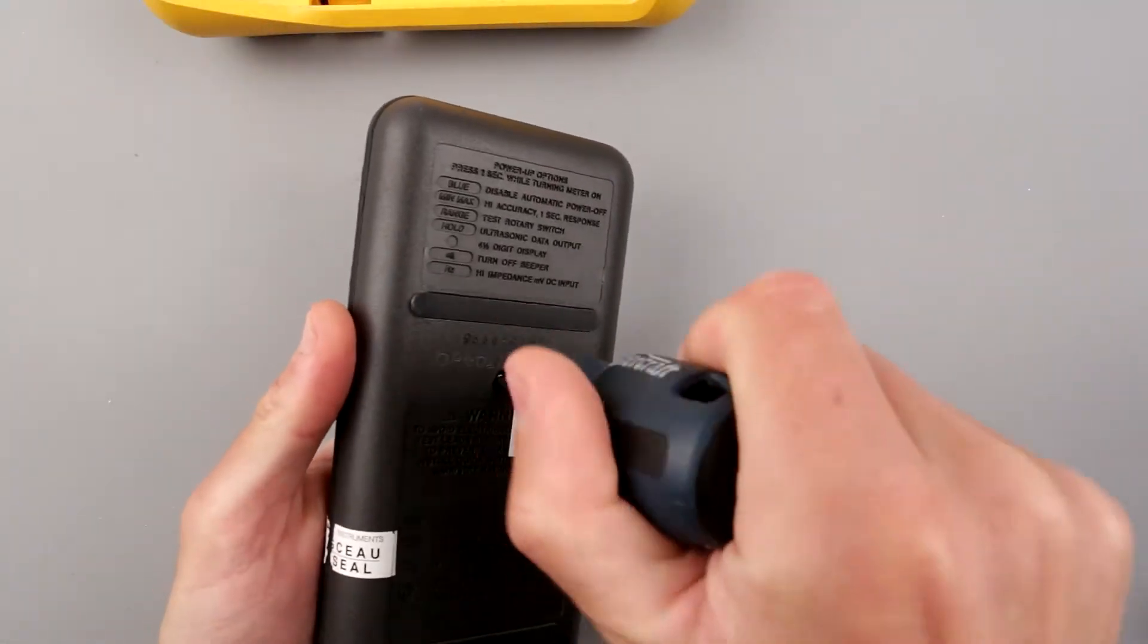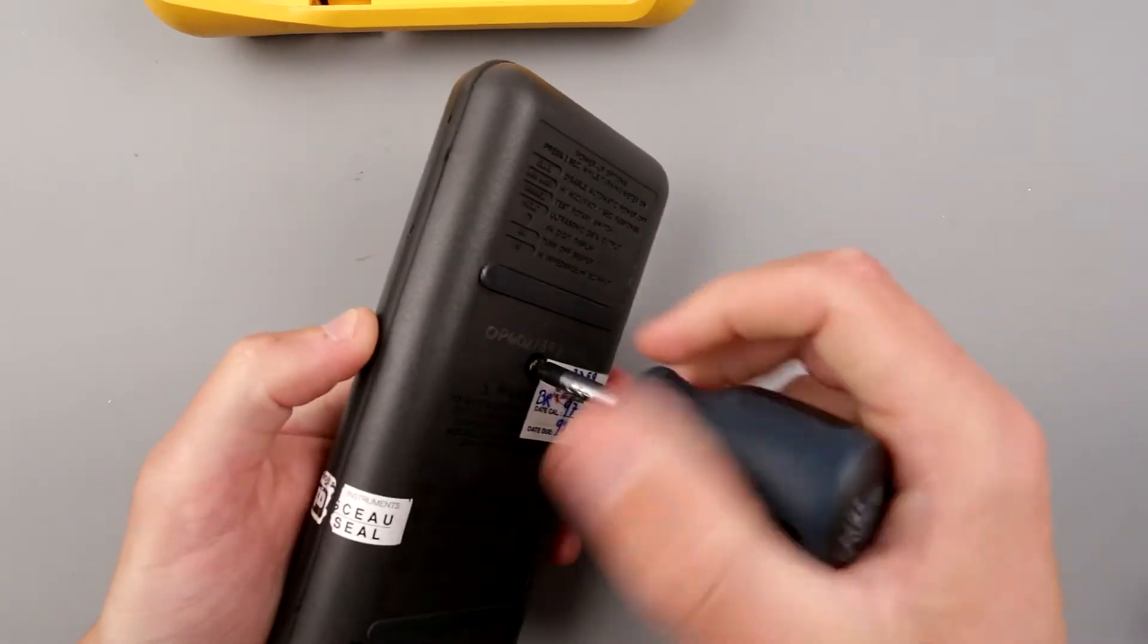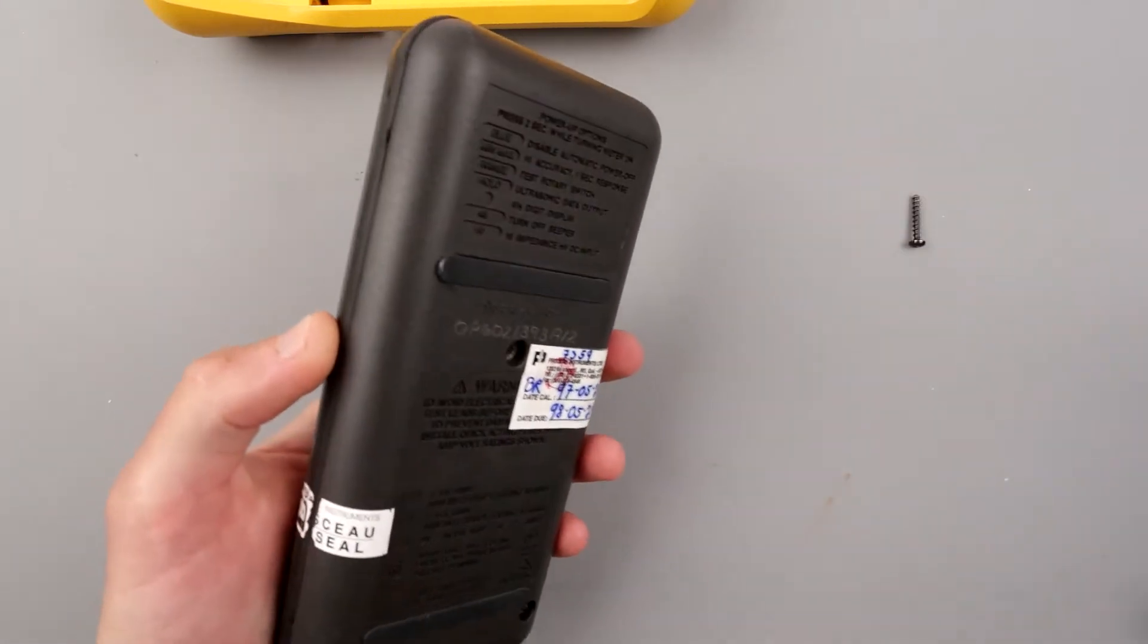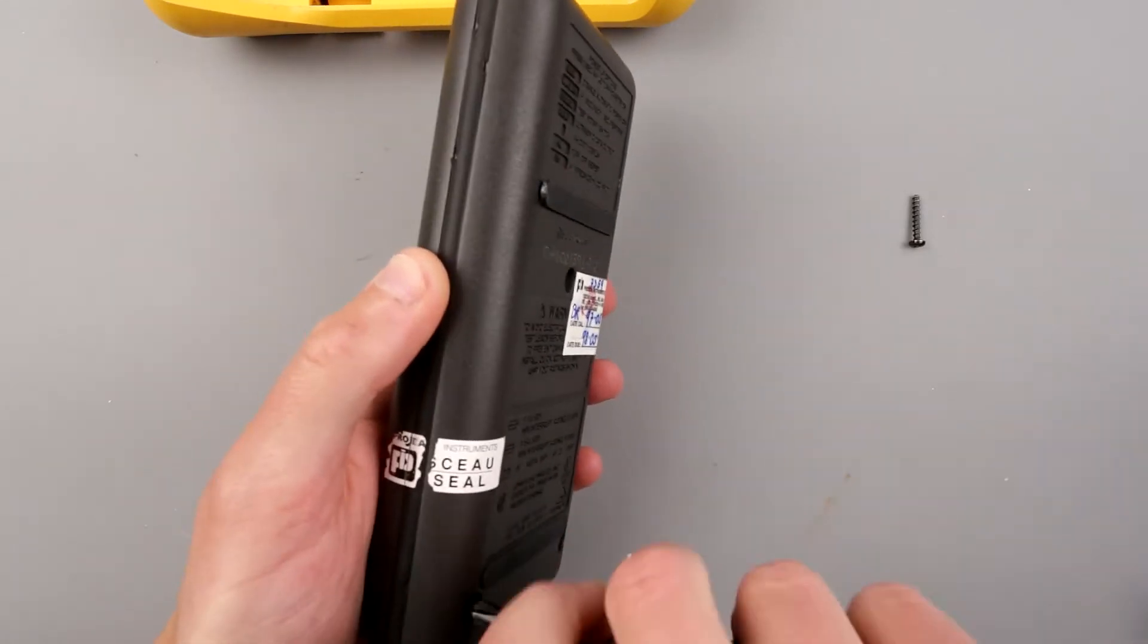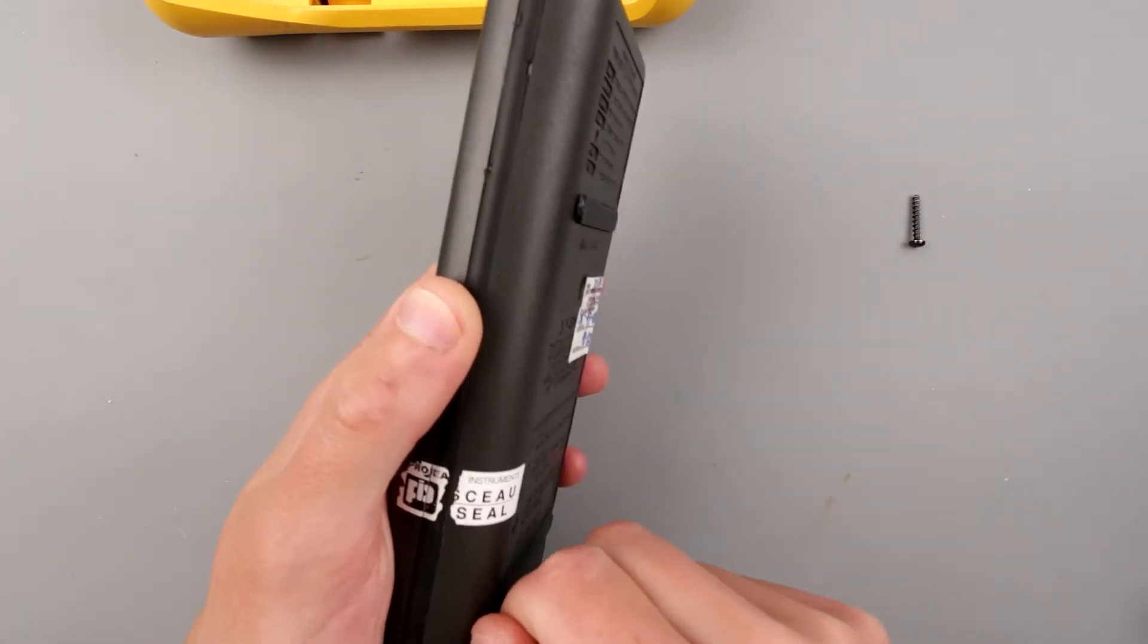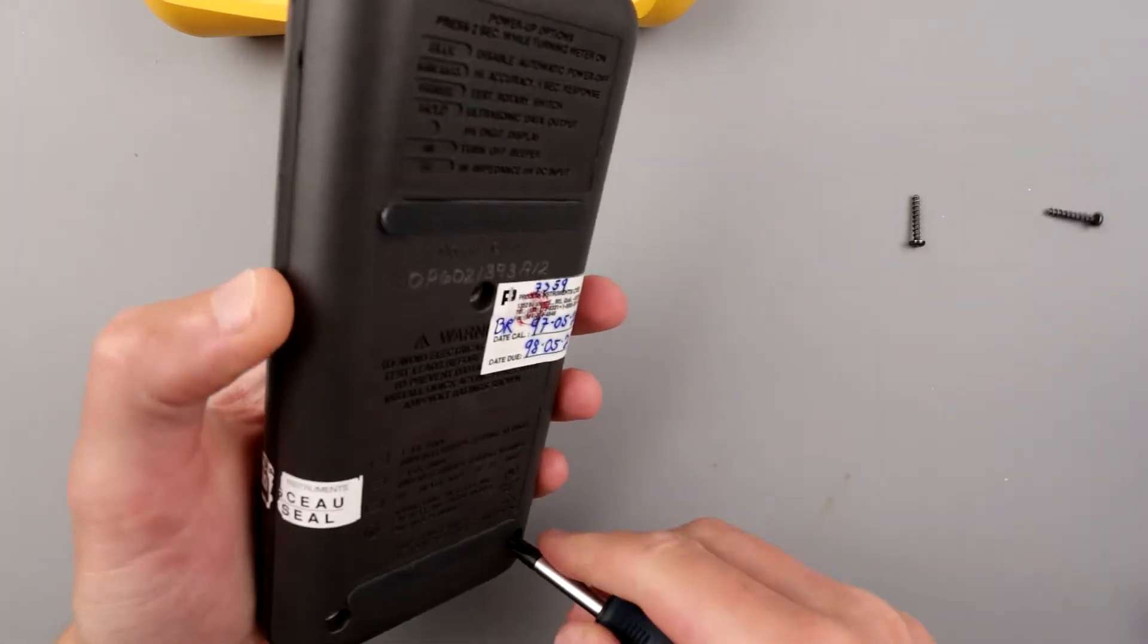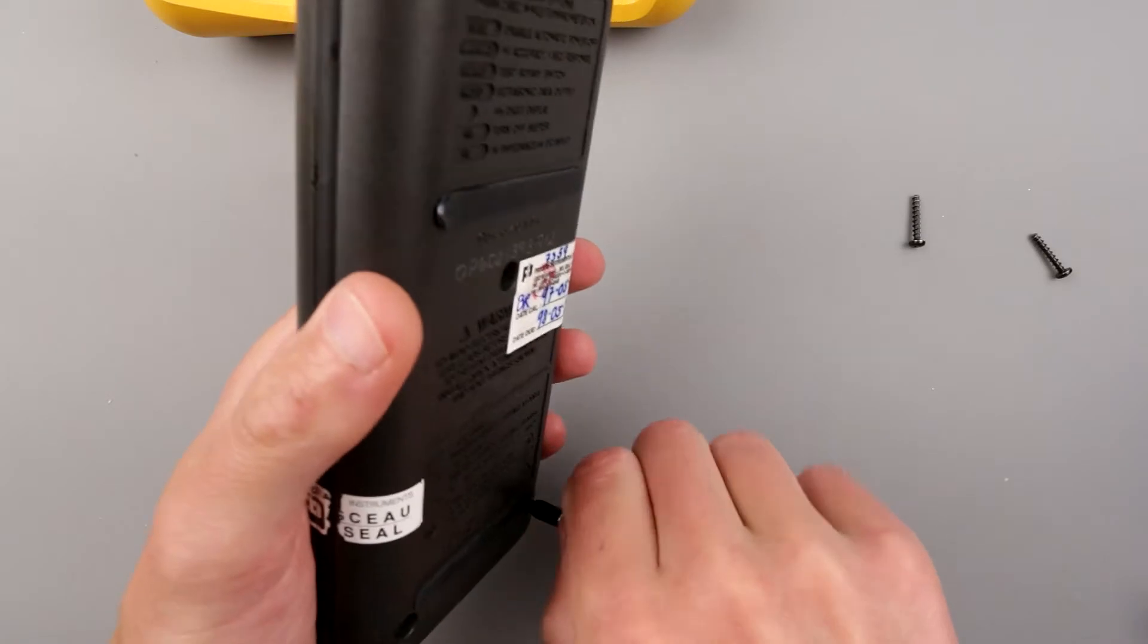Obviously having a fuse in a multimeter is paramount, because I do have a multimeter here, I'll show you in a second, which doesn't have a fuse on the 10 amp range, and luckily it wasn't explosive.